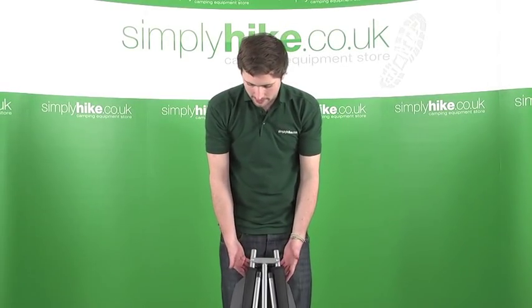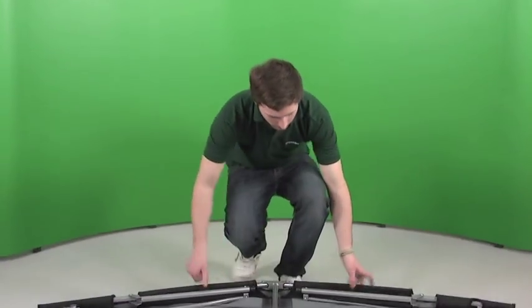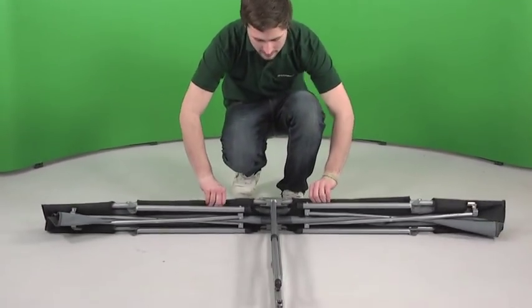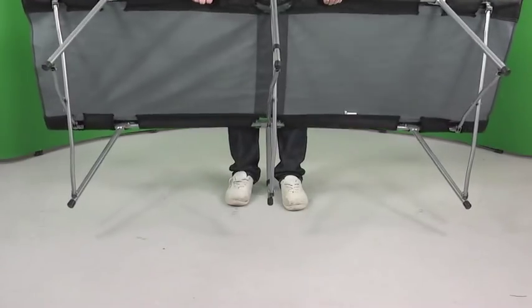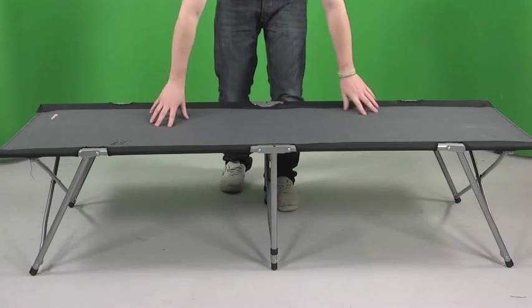So getting the camp bed erect is really easy. Lie it flat down on the floor and open up the two sides, and then literally just by lifting it up the legs spring open. Then lying it flat gives it that tension that it needs to support your weight.